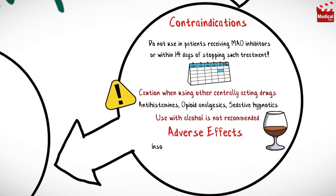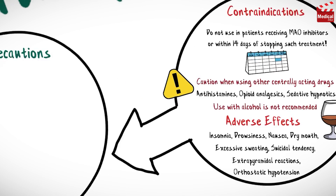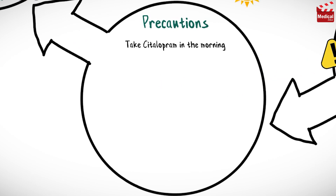Citalopram may cause insomnia, drowsiness, nausea, dry mouth, excessive sweating, suicidal tendency, extrapyramidal reactions, and orthostatic hypotension.